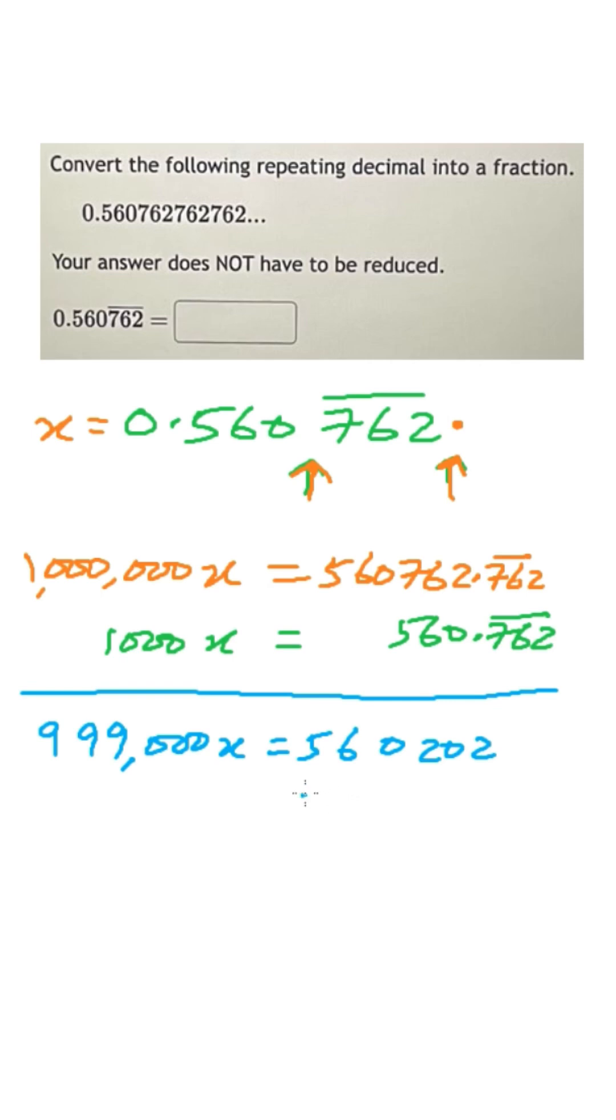So we have come to an integer. And now it's easy. Divide both sides by 999,000, and we'll have x is equal to 560202 divided by 999,000. Now, in the question it says the answer, your answer does not have to be reduced.